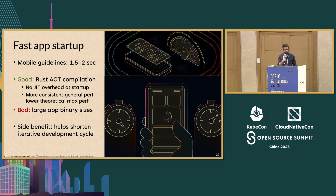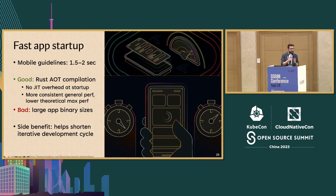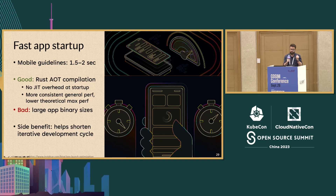Rust does full AOT compilation — fully ahead of time — so there's no potential jank from compiling things just in time at startup. This gives more consistent general performance. One potentially problematic thing is that Rust is often said to have large app binary sizes, but there are ways to mitigate this. And as a side benefit, as we saw with MakePad and other frameworks, having a very fast iterative development cycle is really key — this helps contribute to that if your app boots up really fast.